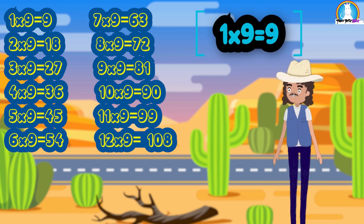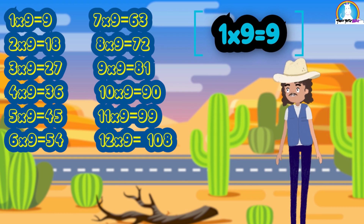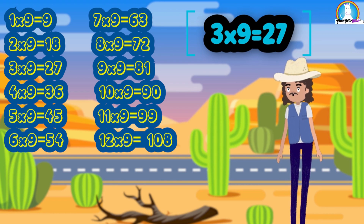1 times 9 is 9, 2 times 9 is 18, 3 times 9 is 27.